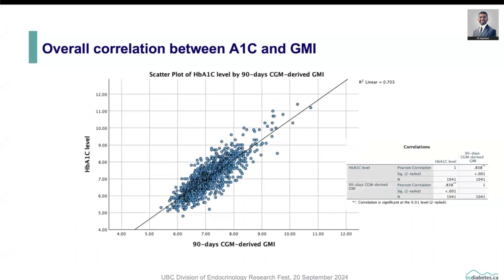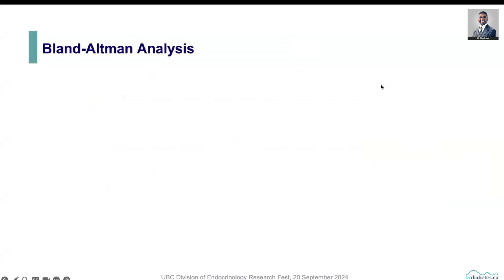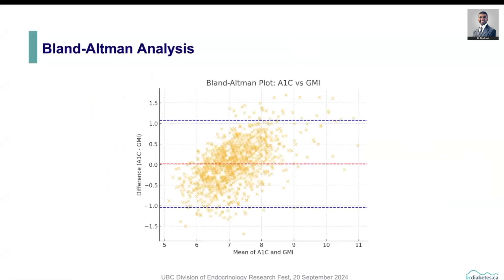Not surprisingly, the overall correlation between A1C and GMI from a statistical perspective is quite strong, as you can see in this scatterplot, with an R-squared of 0.703. And if we look at the Bland-Altman analysis, which is another statistical method to assess discordance, you can see the upper and lower limits of agreement, with around 95 percent of the readings lying within this range.